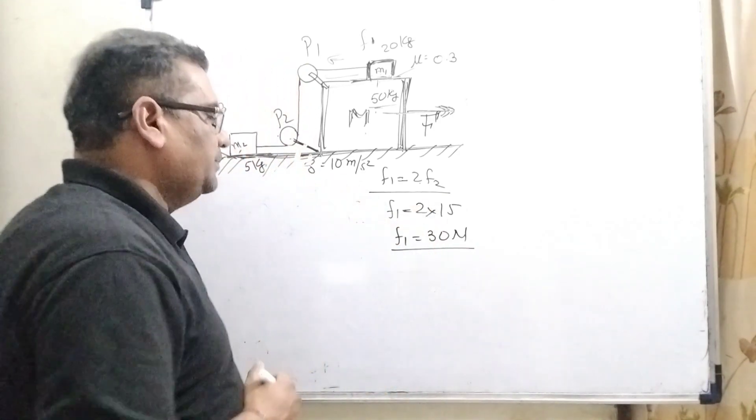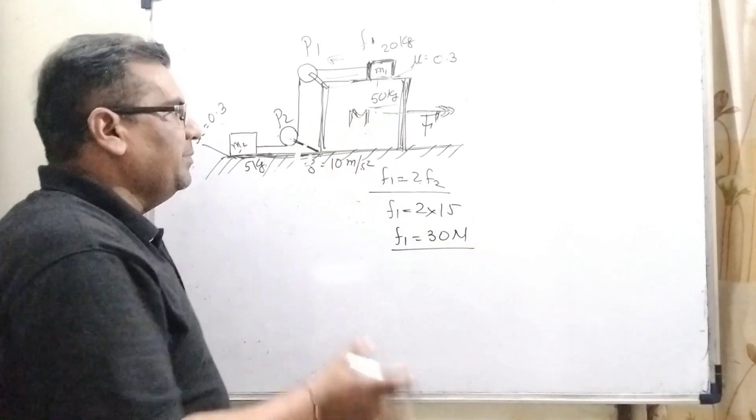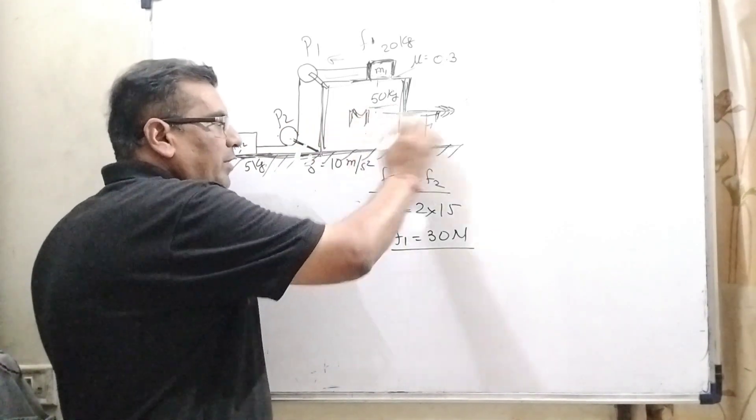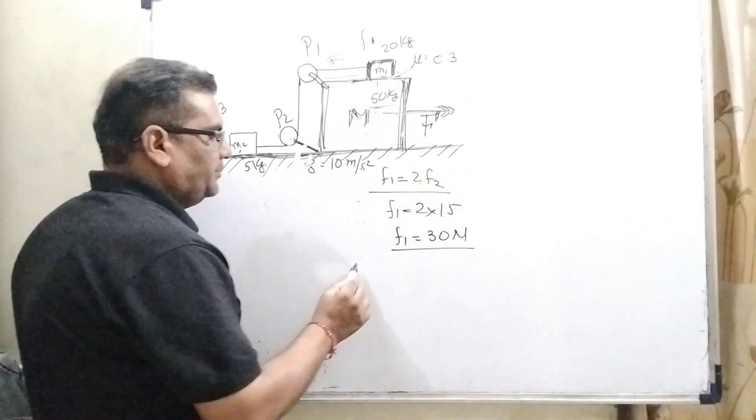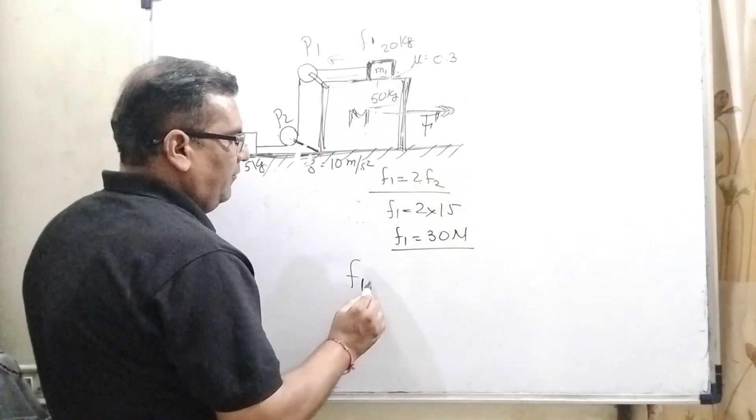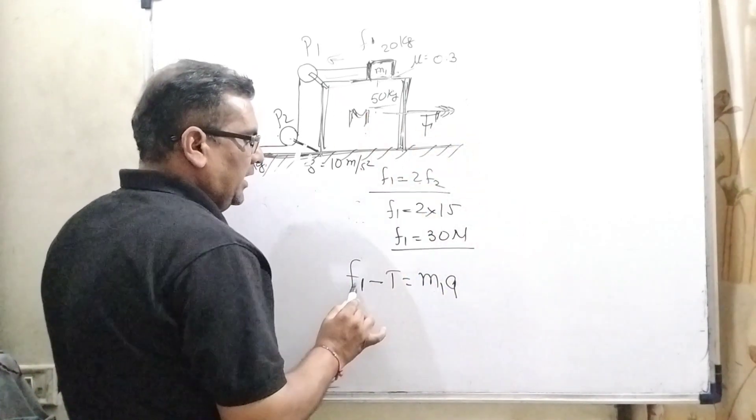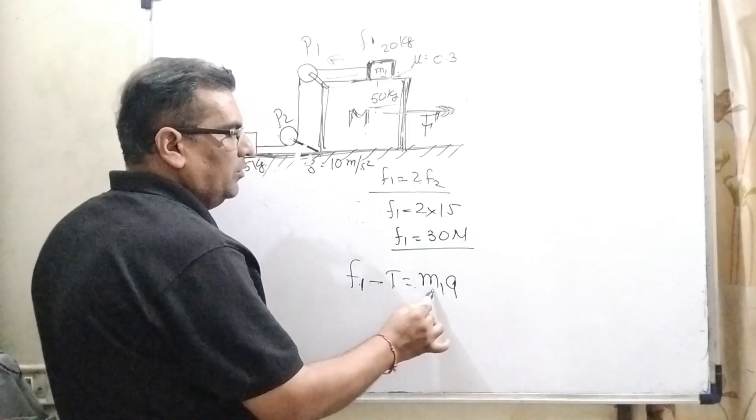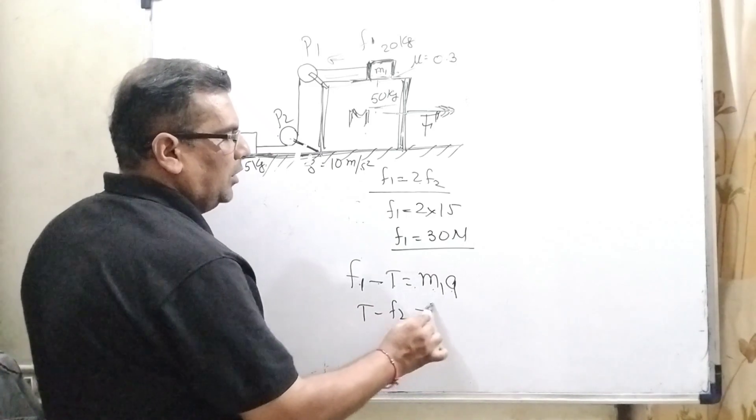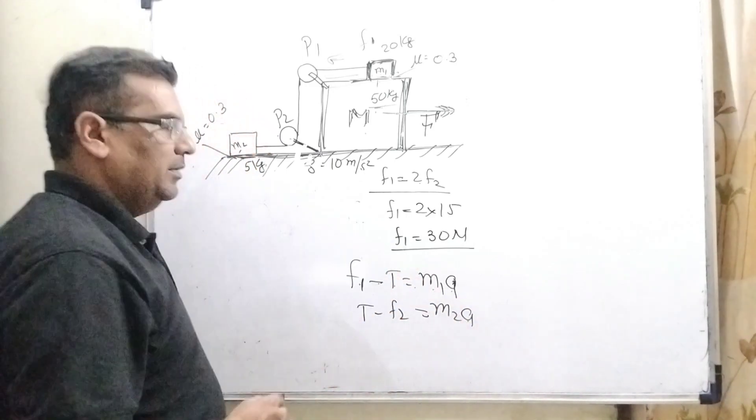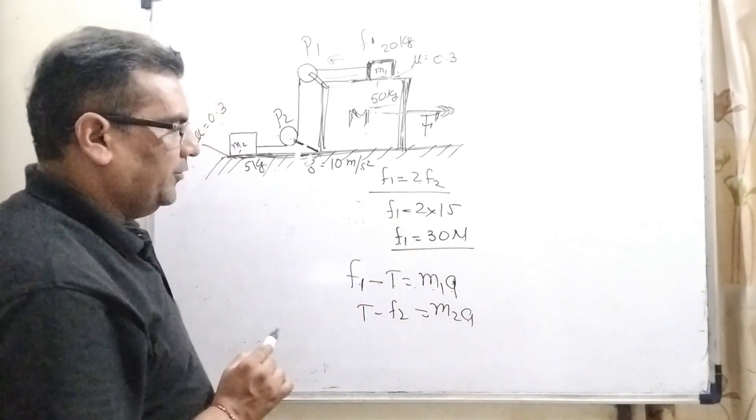In that case also this M1 and M2 is in static condition. It means when M block is moving towards the forward direction then acceleration is same. In that case F1 minus T equal to M1a when body is moving, then F1 minus T equal to M1a and here in this case T minus F2 equal to also M2a because acceleration is same. Why same? Because here F1 is greater than F2.